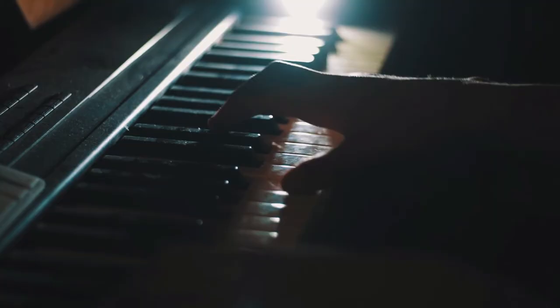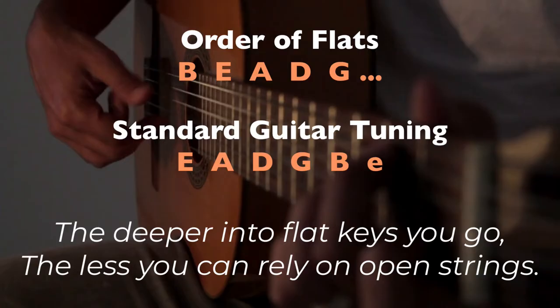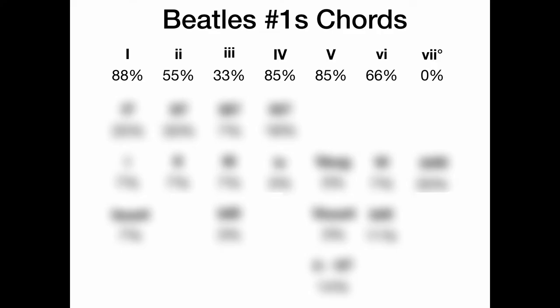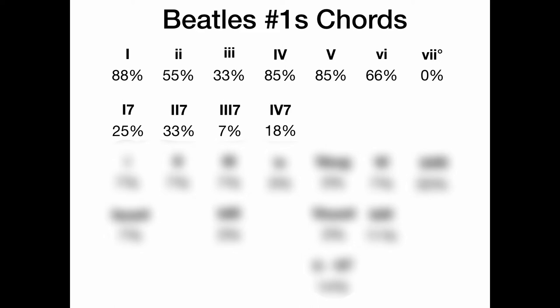When you start getting into flat keys, there are fewer open strings available to use on the guitar — but capos are a thing, so you'll figure it out if you want to break the rules. The majority of the Beatles' chord choices center around the four chords: one, four, five, and six. What is interesting is there's also a decent amount of other diatonic chords, as well as secondary dominant chords and modal borrowing from minor or parallel key centers.